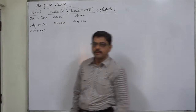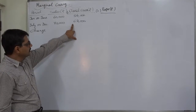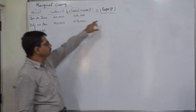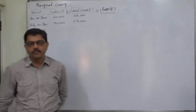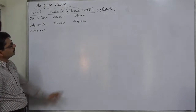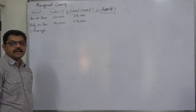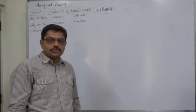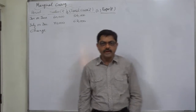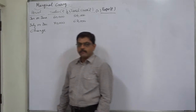We know we are to use the formula change in profit upon change in sales, but here we have total cost. We have two ways: either find sales minus total cost equals profit and use the formula change in profit upon change in sales, or use the formula change in total cost upon change in sales, which gives us the percentage of variable cost to sales.